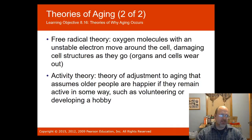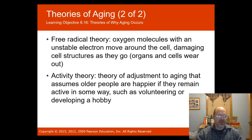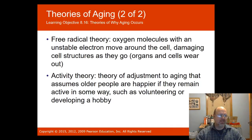The activity theory of aging, proposed by Havighurst in 1968, assumes older people are happier if they remain active in some way — such as volunteering or developing a hobby. An active retired person will likely be happier, healthier, and live longer because they maintain a sense of purpose.